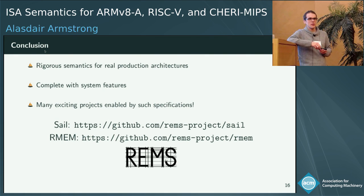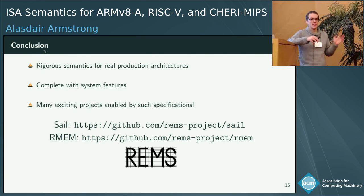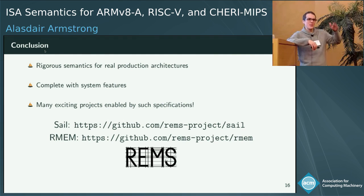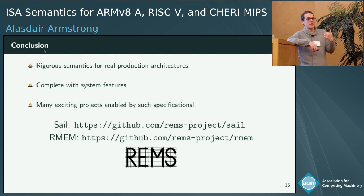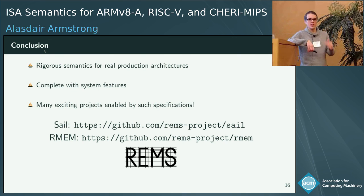An audience question: you want a fancy type system to prevent bugs in the specification — so what is a bug in the specification, and can you specify the specification? Because the specifications are so large, you really do have to test and validate your specification. You can't really have a meta-specification, but it's a real problem. We can test it against the implementation — we test our ARM specification against ARM's own version to make sure they match up — and we run small litmus-style programs to make sure it does sensible things.